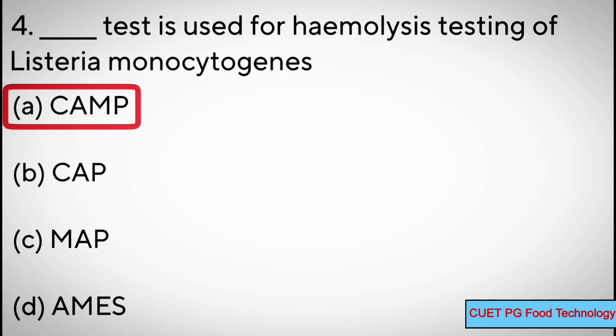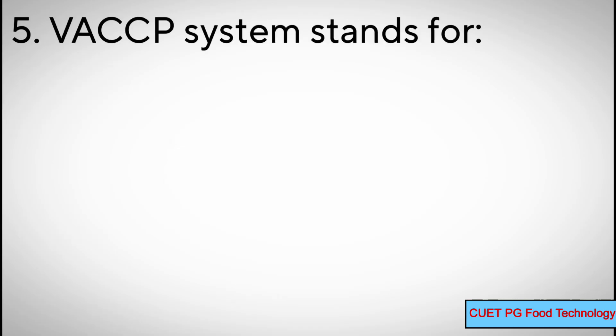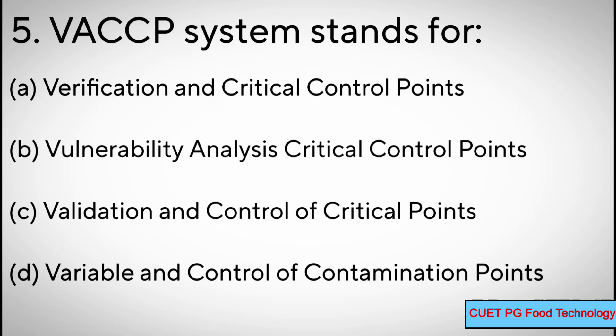Question number five: VACCP system stands for — options: A) verification and critical control points, B) vulnerability analysis critical control points, C) validation and control of critical points, D) variable and control of contamination points. Correct answer: B) vulnerability analysis critical control points.